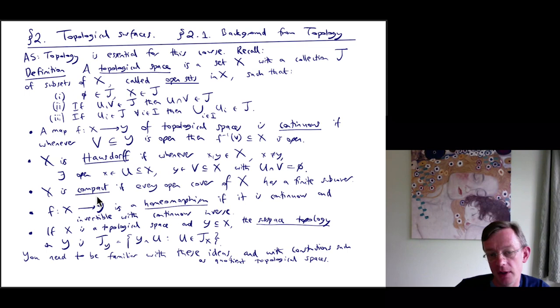A topological space is called Hausdorff if whenever two points X and Y are in big X, which are different, X is not equal to Y, then you can find open sets U containing X and V containing little Y, with U intersection V as the empty set.